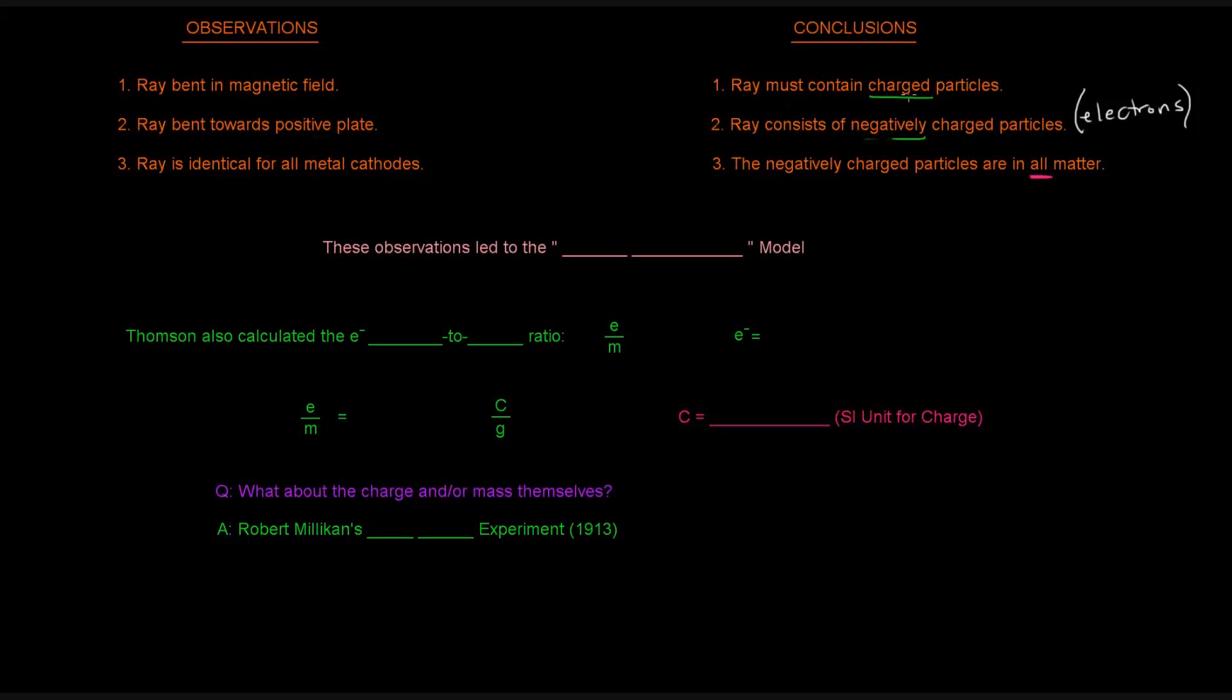He combined that with knowledge that these electrons were about 1,000 times smaller than the smallest atom that was known, right? Smaller than a hydrogen atom, which is the smallest atom, which meant that there is something smaller than an atom, thus disproving Dalton's model, right? Of the billiard ball model.